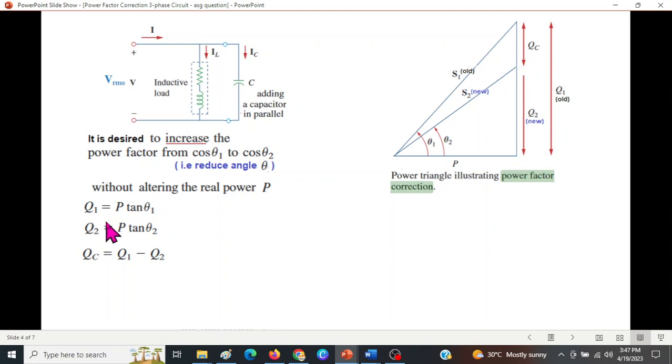From here you can see that Q₁, this one, is P tan θ₁. We know the tangent formula is perpendicular over base. So this is perpendicular, this is base. Q₁ over base P is tan θ. Similarly Q₂ is P tan θ₂, and for the reduction by the capacitor, Qc or the Q by capacitor is Q₁ minus Q₂.